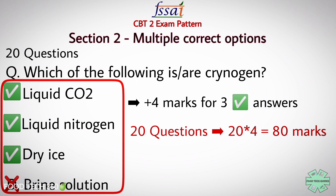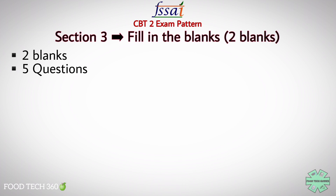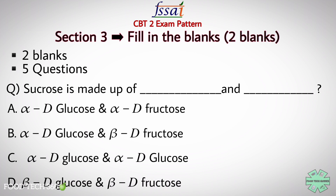Section 3 is Fill in the Blanks with two blanks to be filled — 5 questions will be asked. Example: 'Sucrose is made up of ___ and ___.' Options: A) Alpha-D-glucose and Alpha-D-fructose, B) Alpha-D-glucose and Beta-D-fructose, C) Alpha-D-glucose and Alpha-D-glucose, D) Beta-D-glucose and Beta-D-fructose. The correct answer is option B — Alpha-D-glucose and Beta-D-fructose.